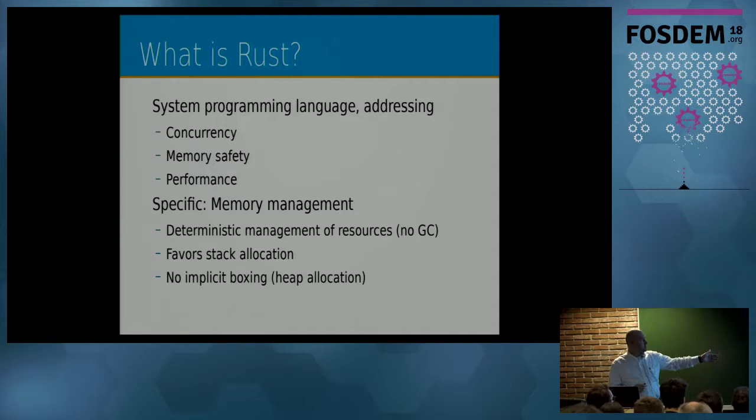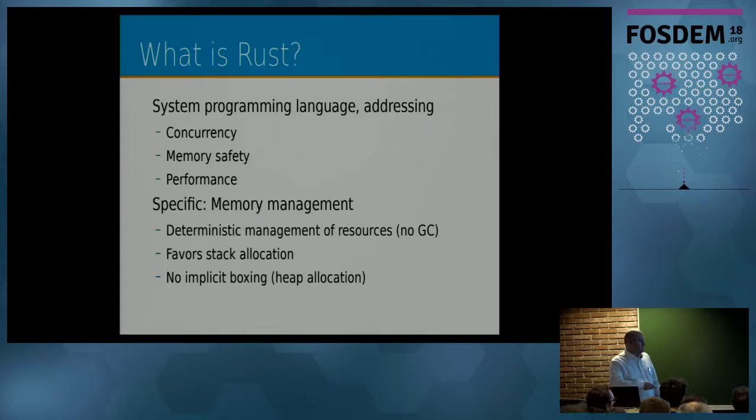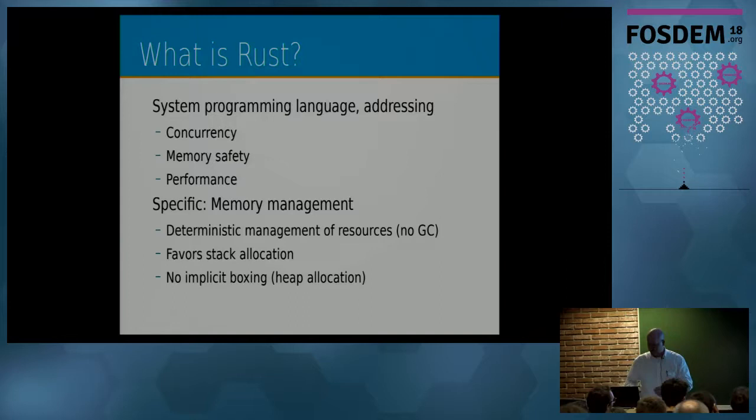Key features of Rust are support for concurrency, memory safety, performance, and especially memory management — deterministic management of resources. There is no garbage collector built in, which is a very important feature. It favors stack allocation, no implicit boxing, so there is no hidden allocation of heap memory causing delays in processing.